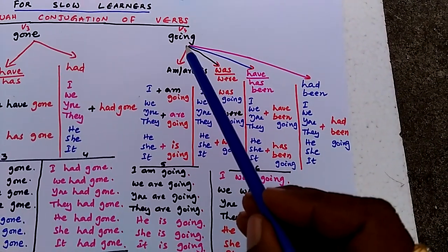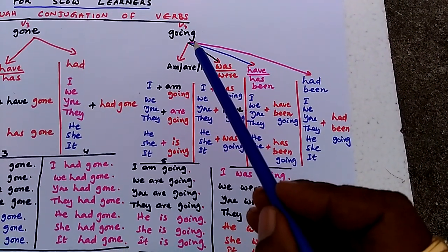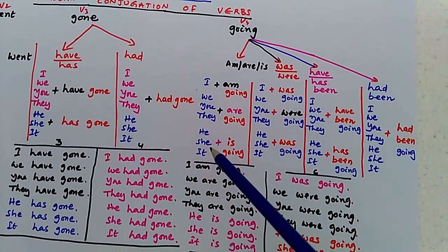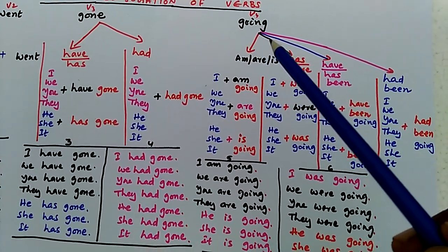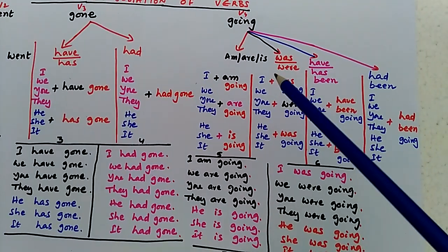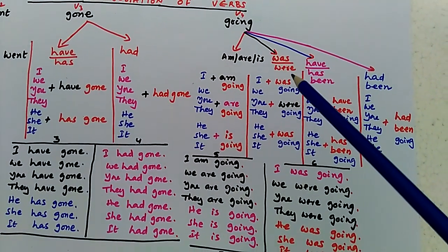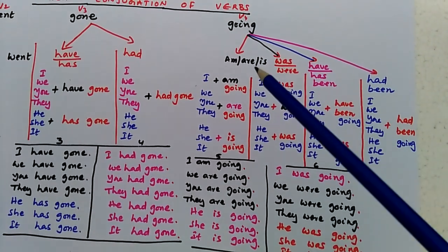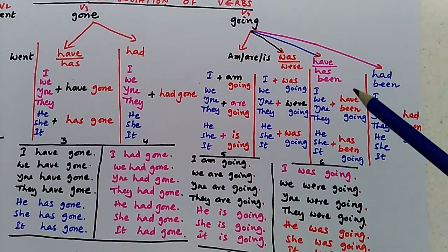Similarly, for verb four 'going', we cannot directly add I, we, you, they, he, she, it to it. That means we cannot write 'I going', 'we going', 'you going' like that. We need to add certain words: am, are, is; and was, were; and has or have been; and had been. By adding these words, we can write the four tense tables.